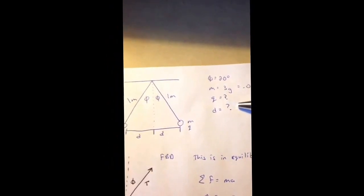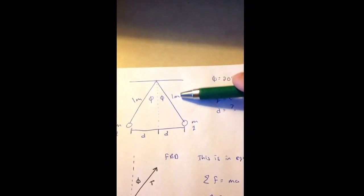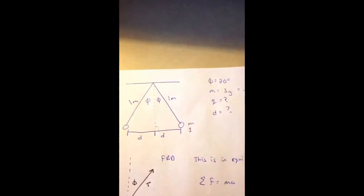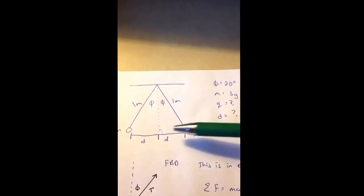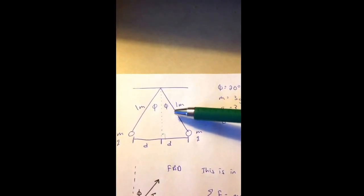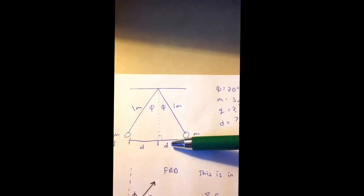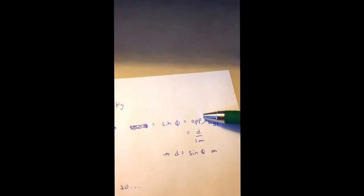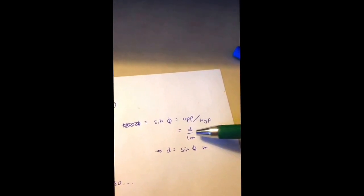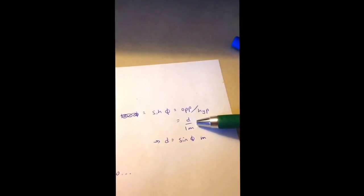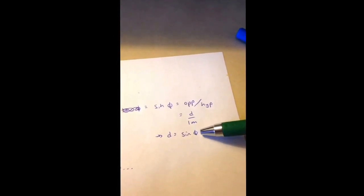d is something that I just put in there, but we can find it pretty easily from trig. Notice we've got a hypotenuse of a right angle here. I should draw that in just to make that clear. We've got a right triangle. We've got a hypotenuse. We've got an opposite side, so we can use the sine function. Sine of phi is defined as the opposite over hypotenuse. In this case, it's going to be d over 1 meter, so I'll solve this equation for d. When I get this, that d is equal to the sine of phi meters, so I'm going to use that later.